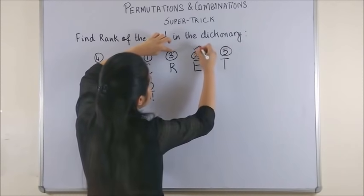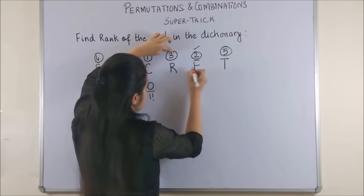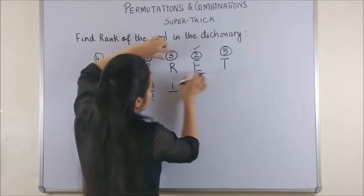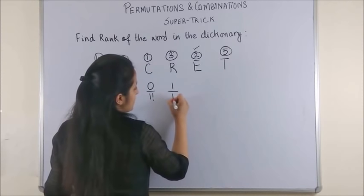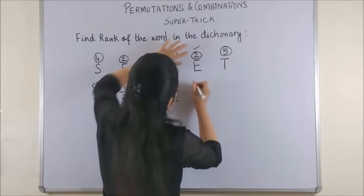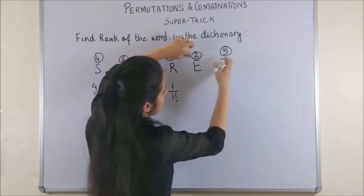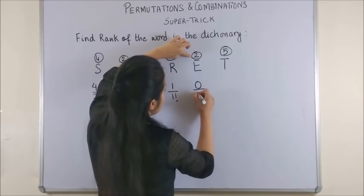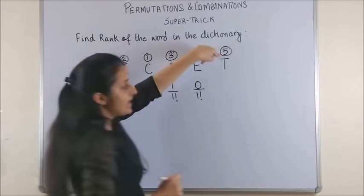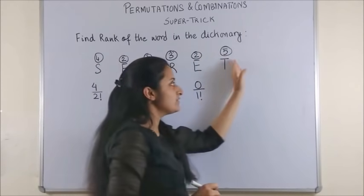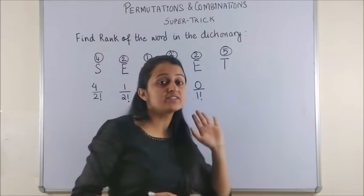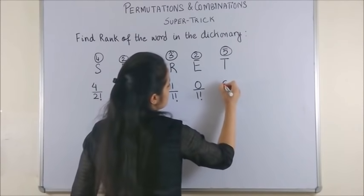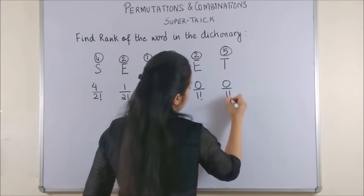Next, moving to R. There is only one alphabet which has a rank lower. So, 1 upon R, E, T, all of them are occurring just once. Next, for E, there is nothing which is lower than rank 2 on its right. So it is a 0 upon 1 factorial. Again, for T, there is nothing which is lower than this rank on its right. We are only checking the ranks on the right. So, this is a 0 upon 1 factorial.